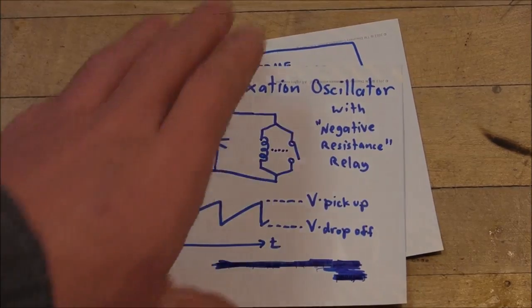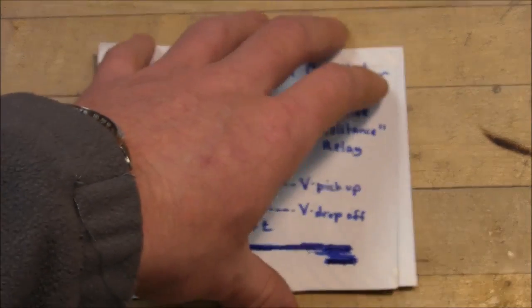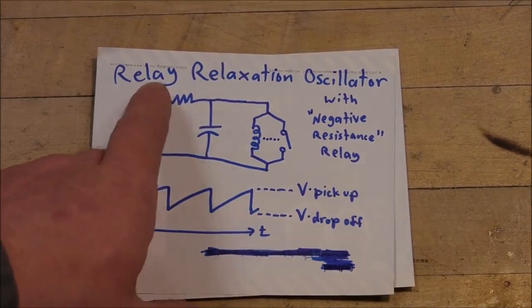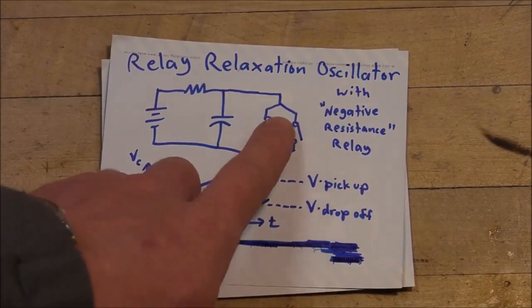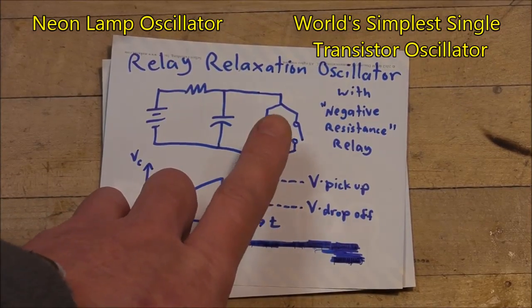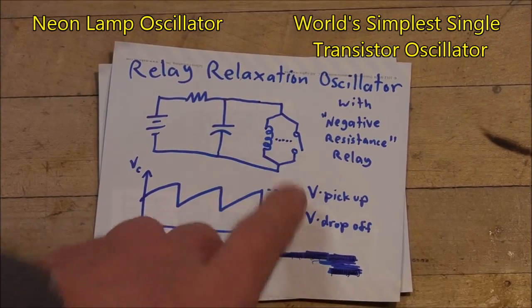And here's a very basic circuit. I already made another couple of videos where I showed how to make relaxation oscillator using a neon lamp as a negative resistance element and also another one with a reverse bias transistor. So go check those out.